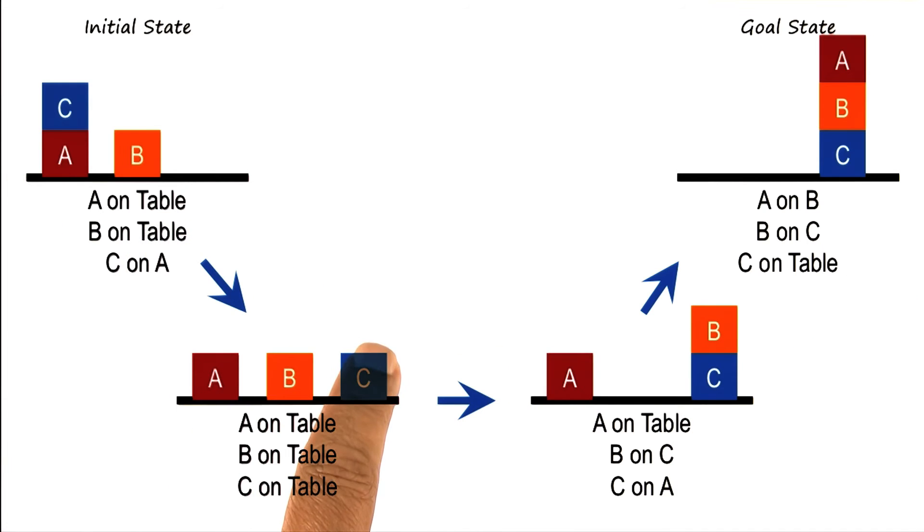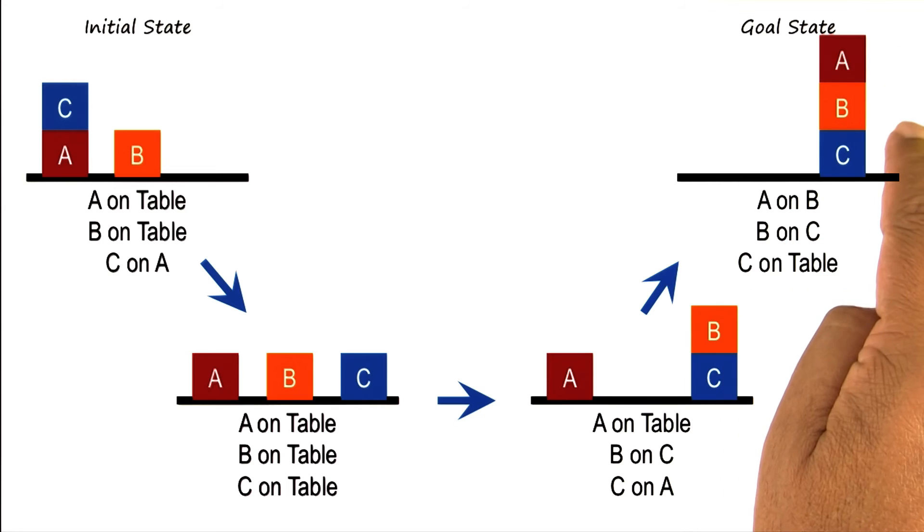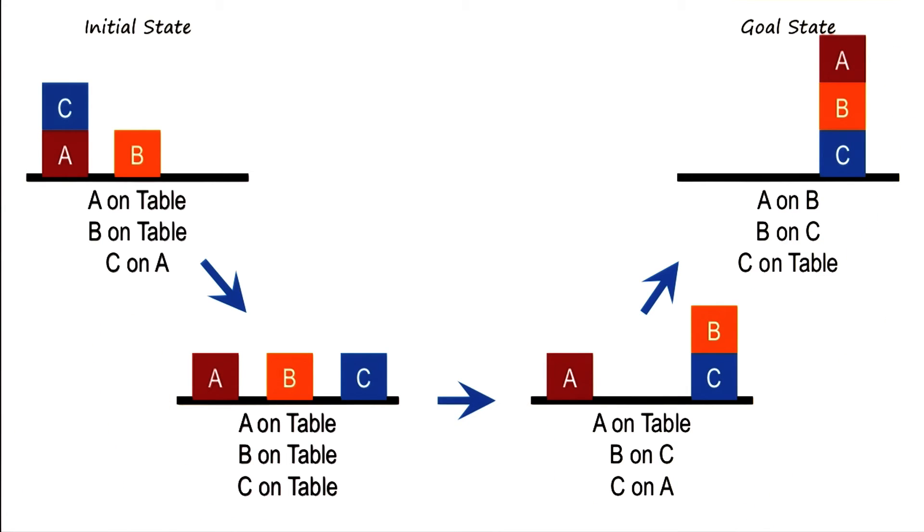First, we put C on the table. Then we put B on top of C, and then we put A on top of B, which is exactly the answer that David had given. This is one sequence, one path from the initial state to the goal state.